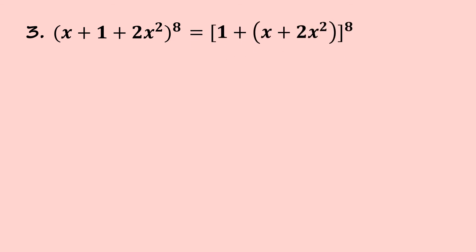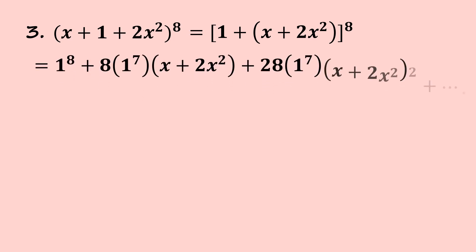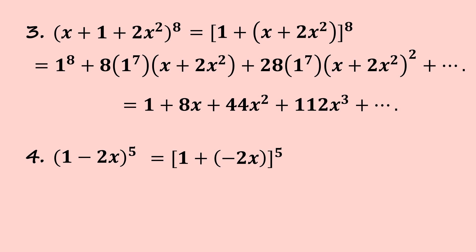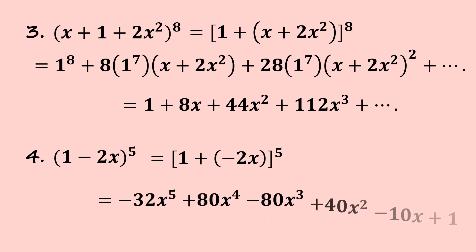For the third question, we regroup so that common terms are together, then expand — noting that the expansion will be large, and we want the term with 1 to the power of 3. Using binomial expansion we arrive at the final answer. For question four, (1 minus 2x) to the power of 5: we regroup the sign by rewriting it as 1 plus (minus 2x), all to the power of 5, then solve to get the final answer.